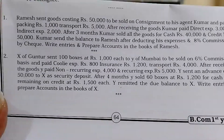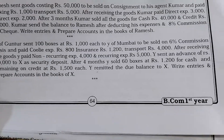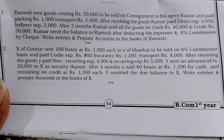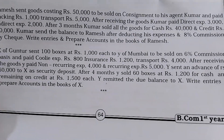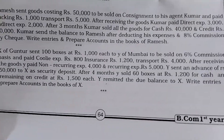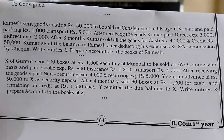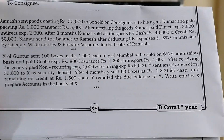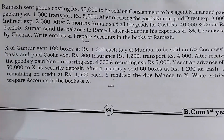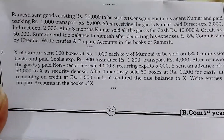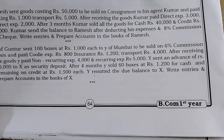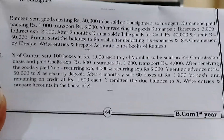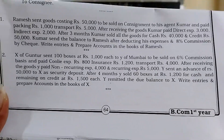X of Guntur sent 100 boxes at 1,000 rupees each to Y of Mumbai, to be sold on 6% commission. X is the consignor and Y is the consignee. 100 boxes at 1,000 rupees equals 1 lakh rupees. X paid coolie expenses 800, insurance 200, transport 4,000 - total 6,000 rupees expenses paid by the consignor.